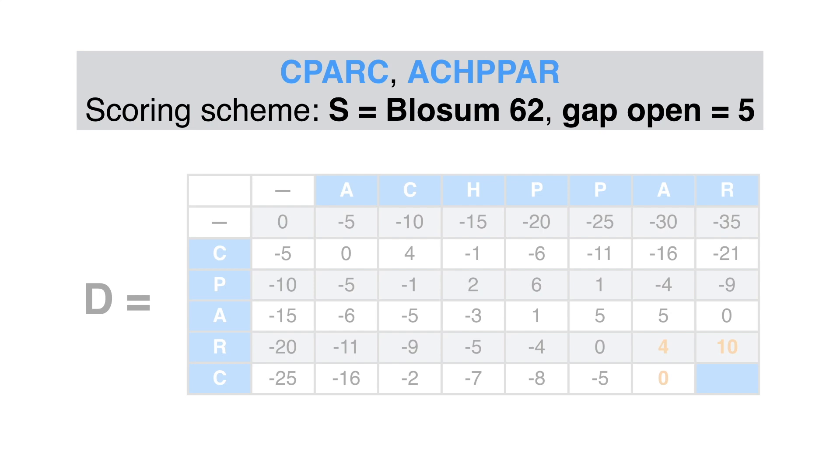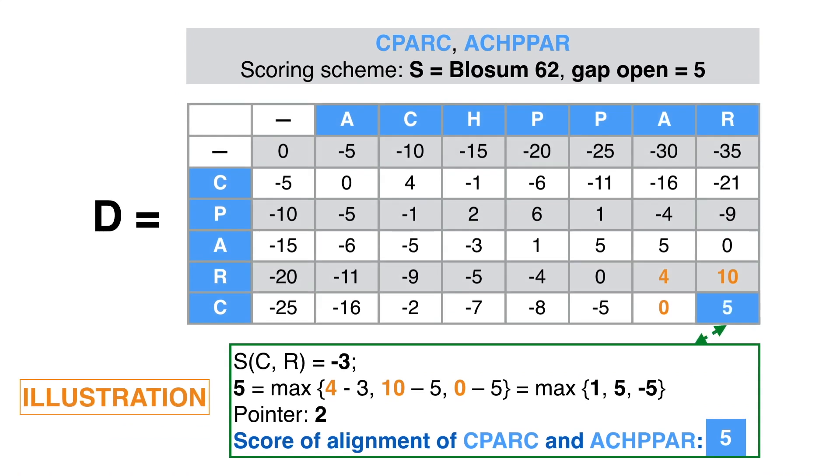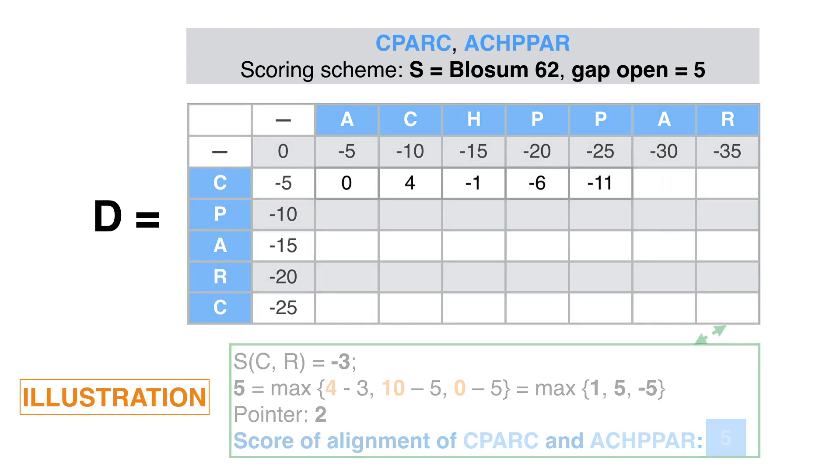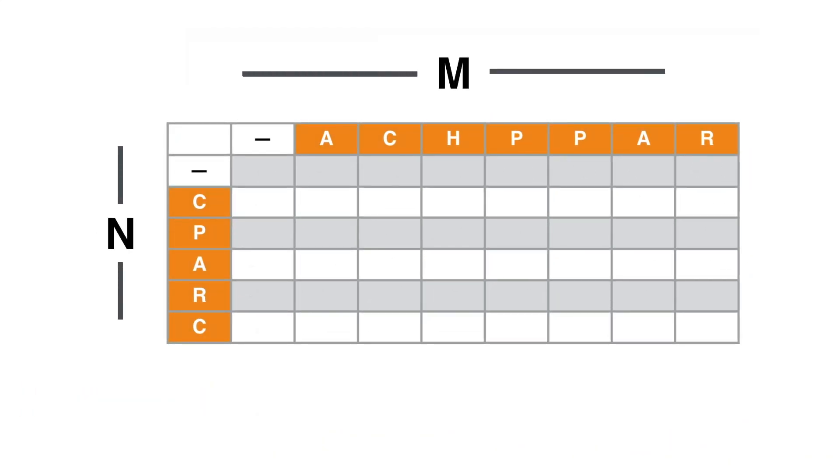The score, meaning the maximum score of the global alignment of CPARC and ACHPPAR with the BLOSUM62 substitution matrix and a linear gap penalty of 5, is 5. It is worth remarking that the score of the global alignment will always be the last computation. This is the value in the bottom rightmost corner of D. There are no shortcuts. We have to compute each entry in the array to get to the last one. Therefore, the computation of the score involves order MN applications of the recursive formula. This is what is usually expressed by saying that the Needleman-Wunsch algorithm is order MN or N squared if N equals M.